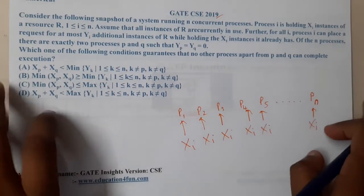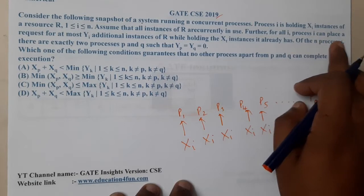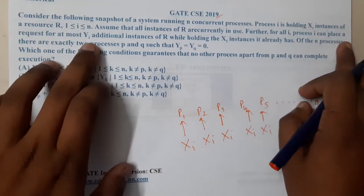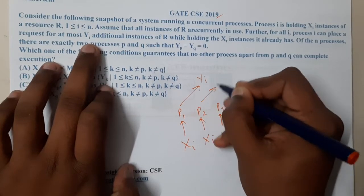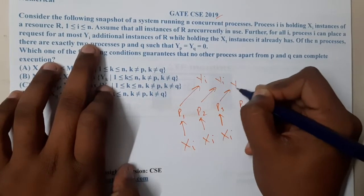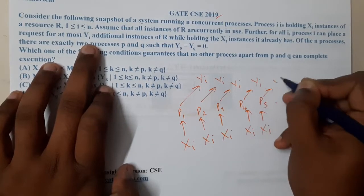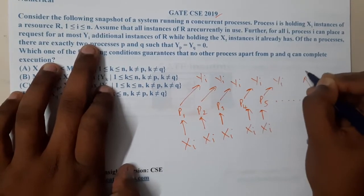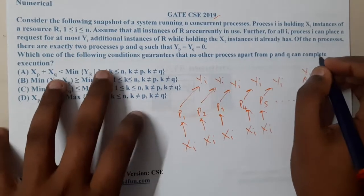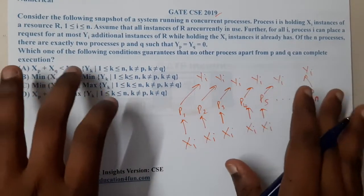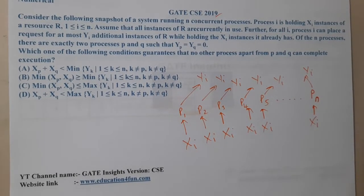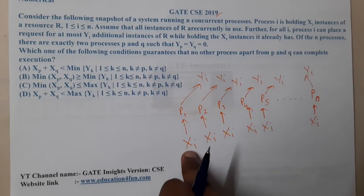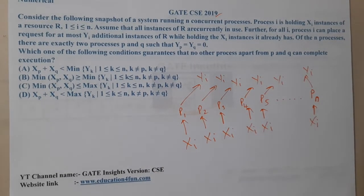Further, for all i, process i can place a request for at most y_i additional instances. So each process is requesting y_i items while already holding x_i instances. These x_i and y_i are just numbers — I am representing them with that terminology for easy understanding.